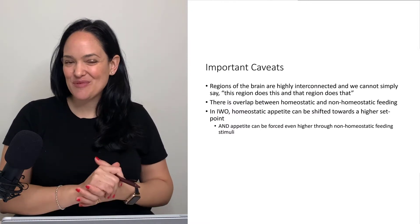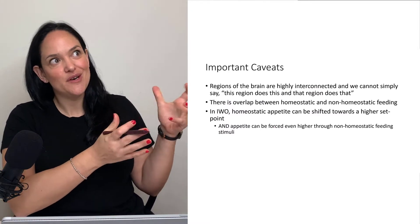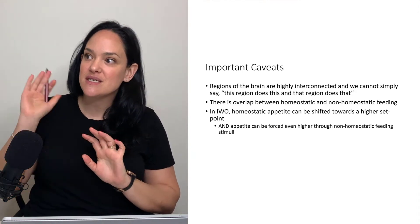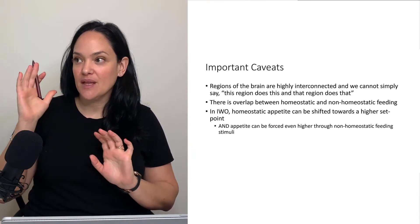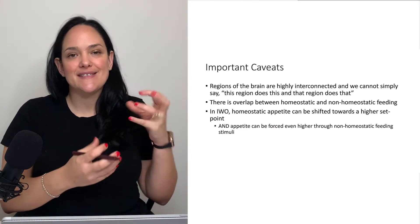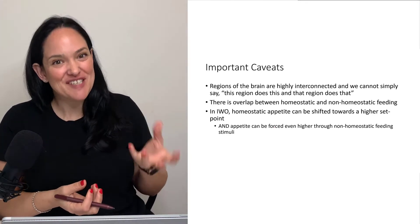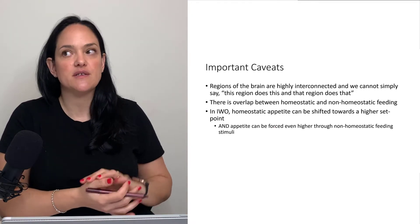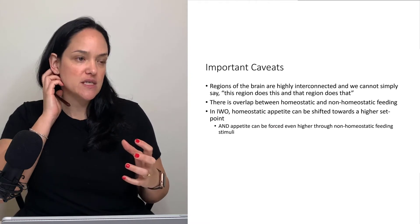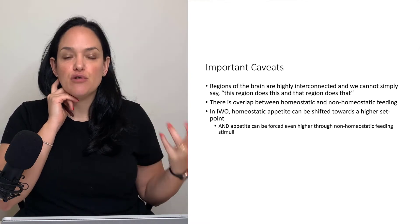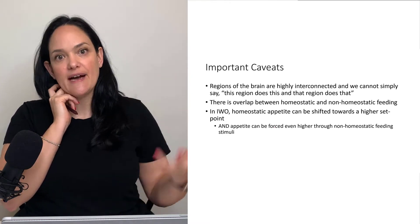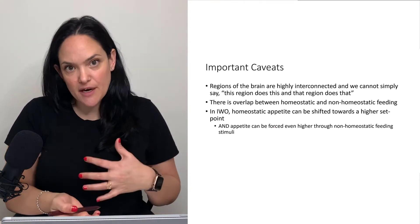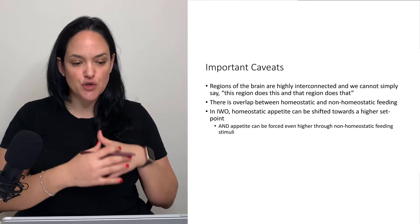Some important caveats before we go further: I'm going to generalize and say the hippocampus does this, the prefrontal cortex does this, and the nucleus accumbens does this — but the brain doesn't work that way. It's not reductionist in nature. Things are highly integrated with lots of communication between areas of the brain. We do see certain processes and behaviors more localized, with activations in certain brain regions more so than others with certain behaviors and experiences.